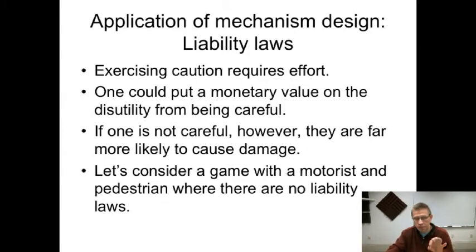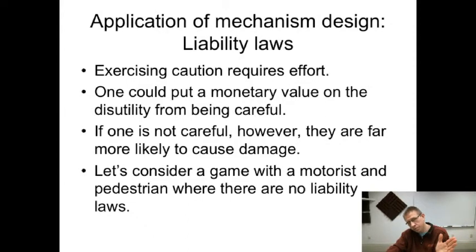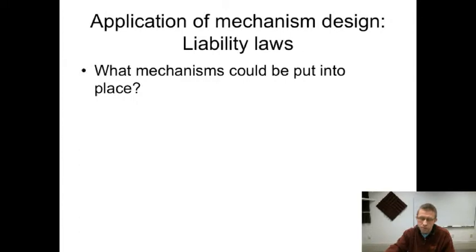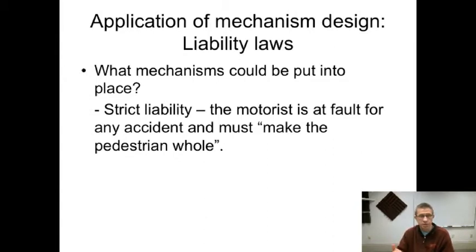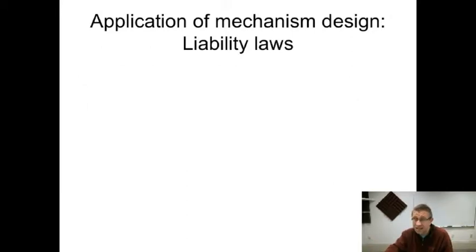We're going to formalize this in class with a payoff matrix. I'll write out the three alternative laws we're going to consider. Instead of no laws, one alternative mechanism is strict liability: the motorist is at fault for any accident and must make the pedestrian whole. That's a possible law — if there's an accident, the motorist is at fault and must make the pedestrian whole. That's called strict liability.